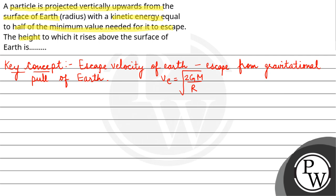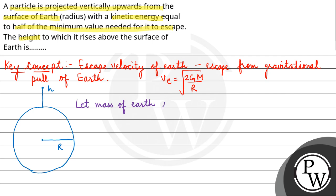So now according to the question, from the surface of earth a particle is projected in the vertically upward direction. The radius of earth is R, and let's say it goes to a maximum height H from the surface of earth. Let us consider that mass of earth is capital M and mass of particle is m.